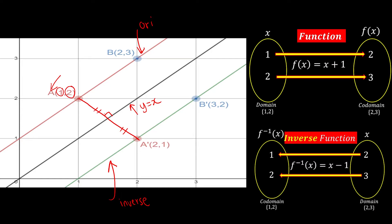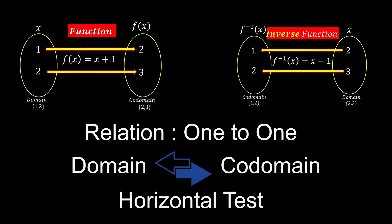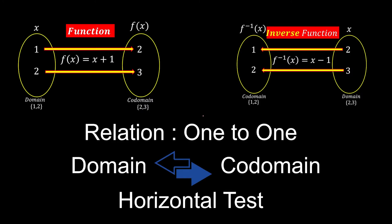To prove this with coordinates: the original function has point (1, 2), and its reflection becomes (2, 1) — x and y swap. Another point b at (2, 3) becomes (3, 2) on the inverse function — just swap x and y. However, for a function to have an inverse, we must fulfill the requirement that the relation is one-to-one.